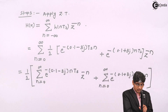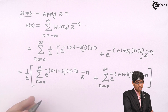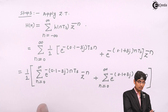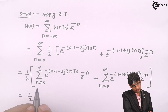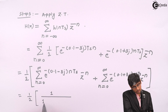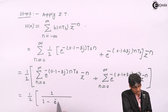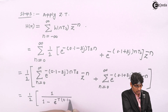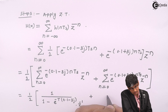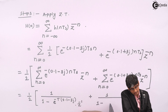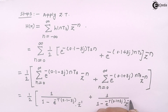Taking 1/2 outside and splitting the summation, I apply the geometric series formula 1/(1−a·Z^(−1)) to each term. This gives (1/2) times [1 divided by (1 minus e^(−T(0.1−3J))·Z^(−1)) plus 1 divided by (1 minus e^(−T(0.1+3J))·Z^(−1))].